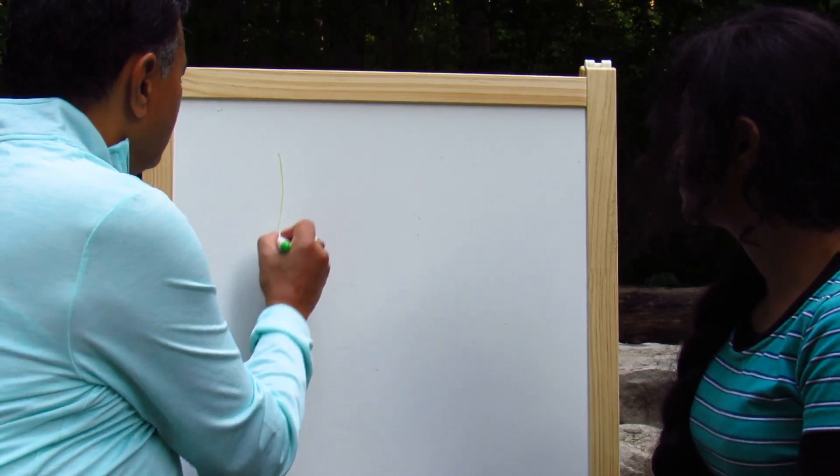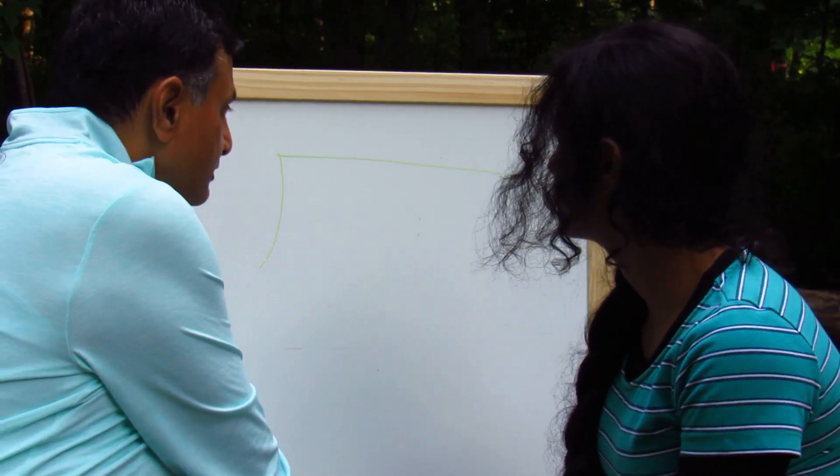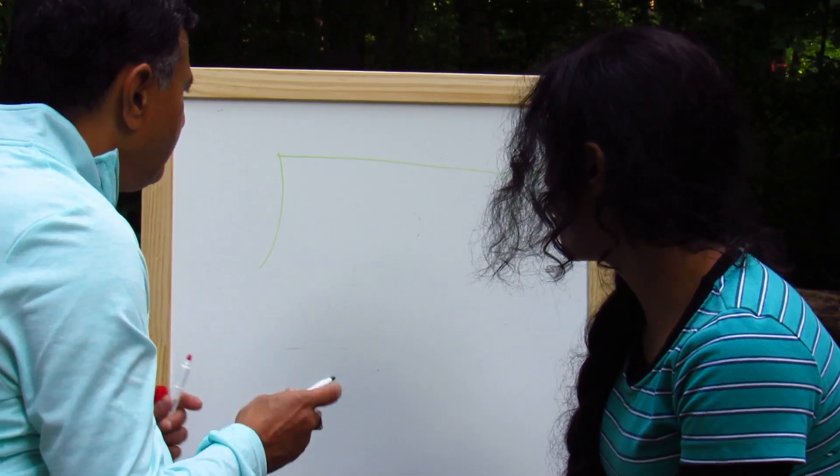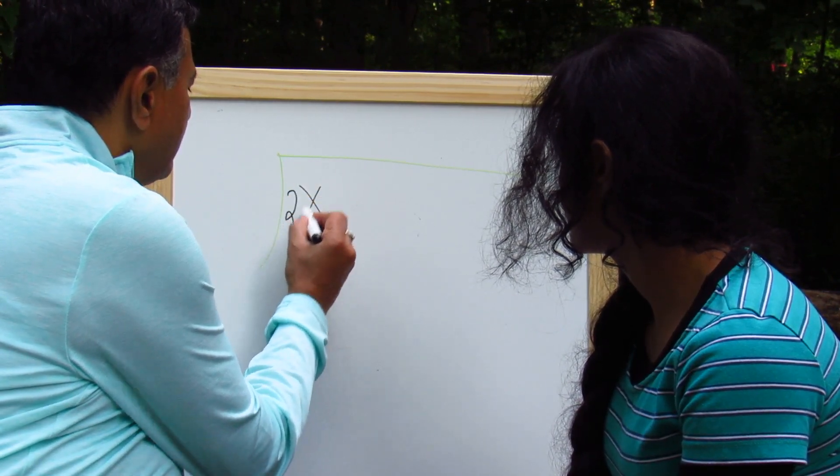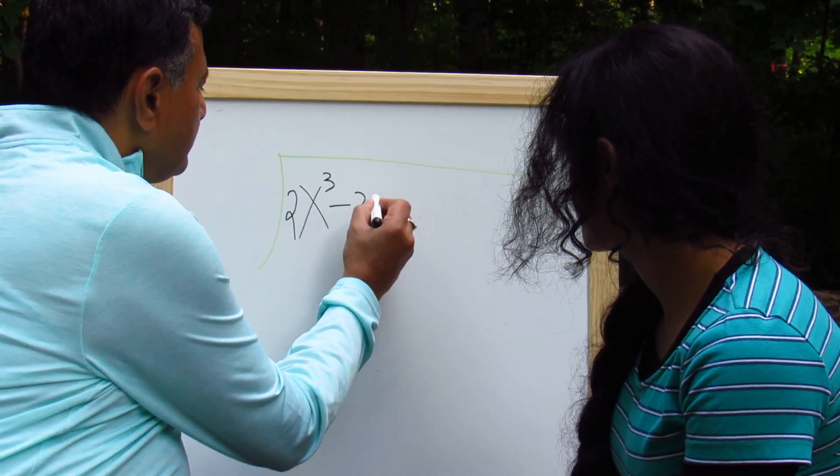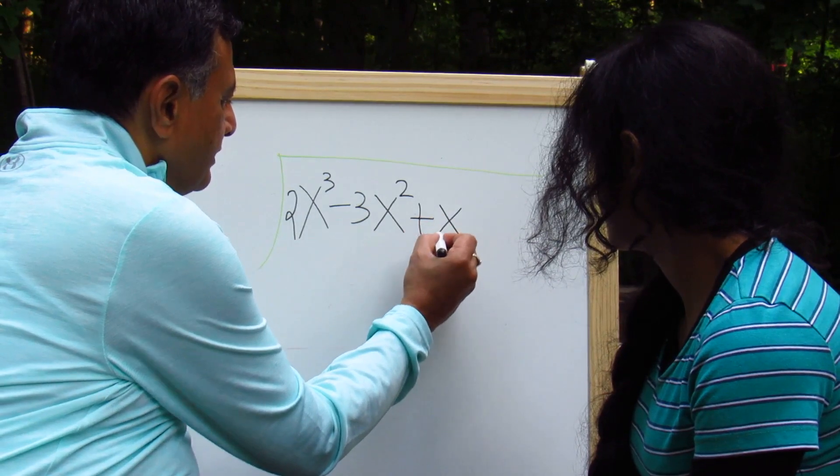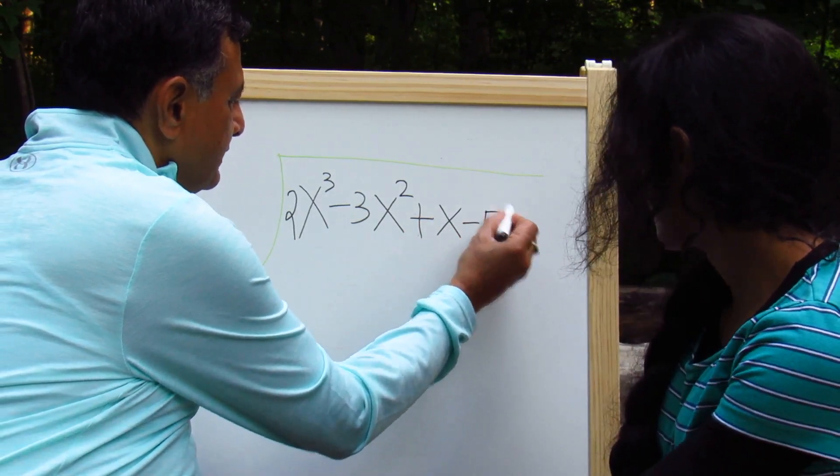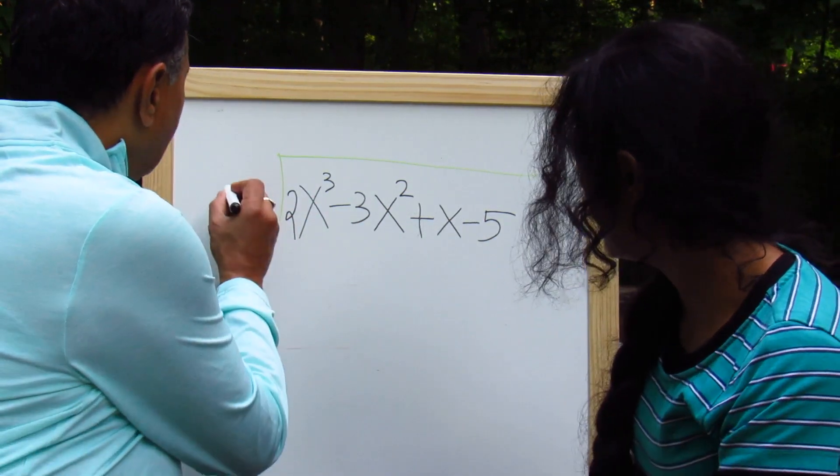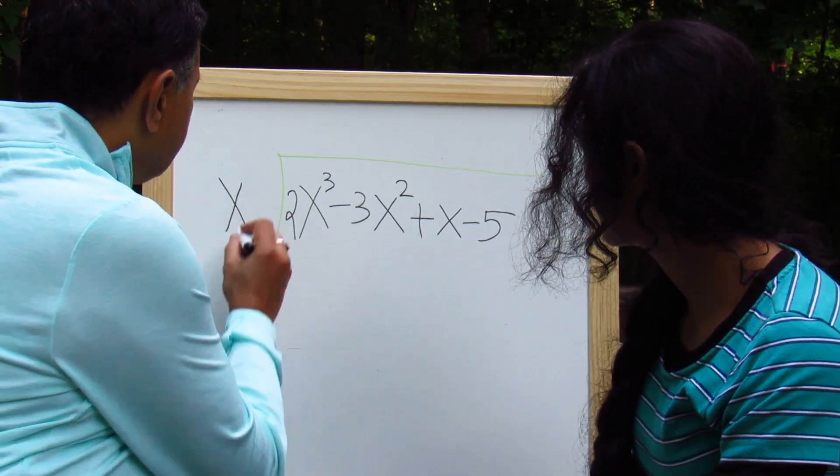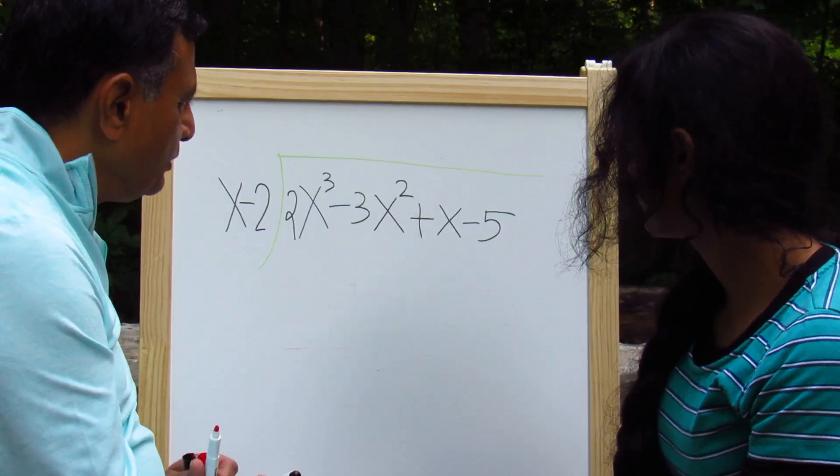So polynomial means lot of terms. So I'm making a symbol here for division. You may not see it so well in the screen, but when I put numbers, they'll be clear. So let's say we have a cubic. Let's say 2x cubed minus 3x squared plus x minus 5. Let's say that's a polynomial which has got 1, 2, 3, 4 terms. And we are going to divide this by, let us say, x minus 2.